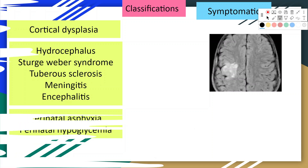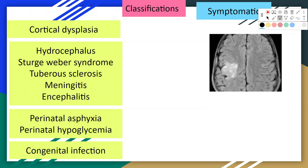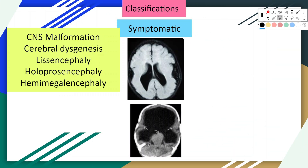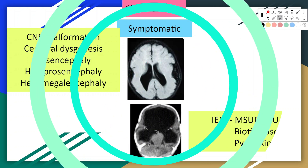Perinatal injuries like hypoxic-ischemic encephalopathy and neonatal hypoglycemia have also been implicated in the development of infantile spasms. Congenital infections such as toxoplasmosis, syphilis, and cytomegalovirus are also potential causes. Other CNS malformations that may result in infantile spasms include cerebral dysgenesis as seen in Aicardi syndrome, lissencephaly as in Miller-Dieker syndrome.